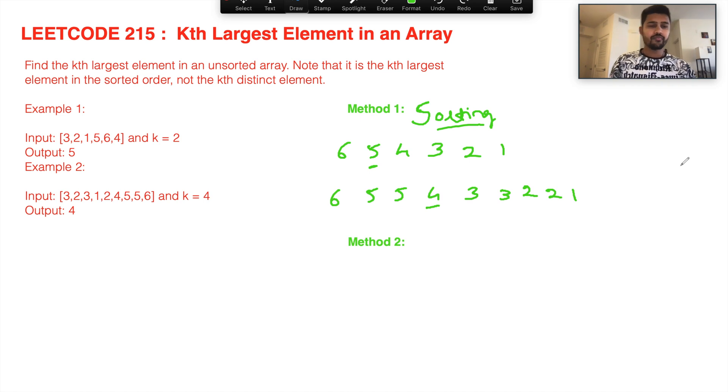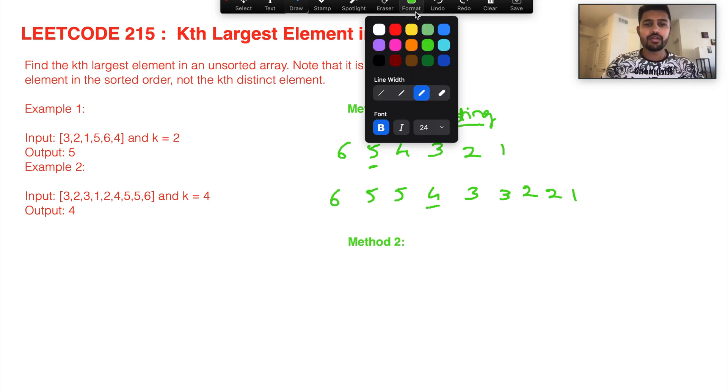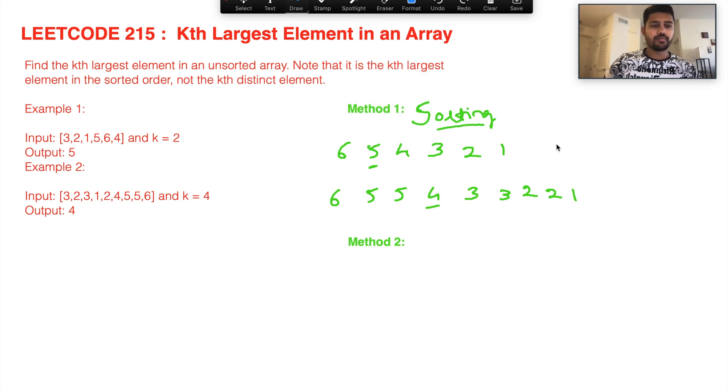It's quite simple. Here the time complexity will be O(n log n) because you are using a sorting method. It's not that efficient. That's the reason this problem has been termed as a medium level problem, because you have multiple ways to solve and there's a much more efficient method as well. Here n is the length of the input array.